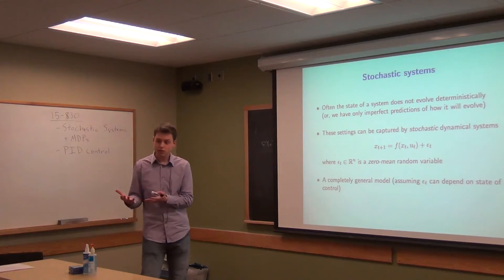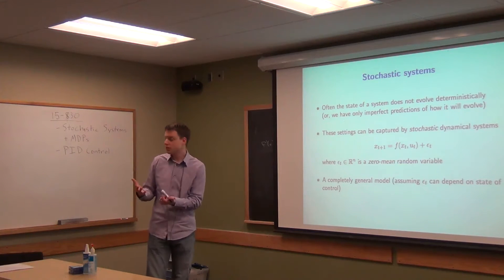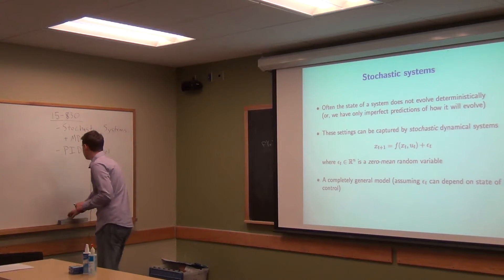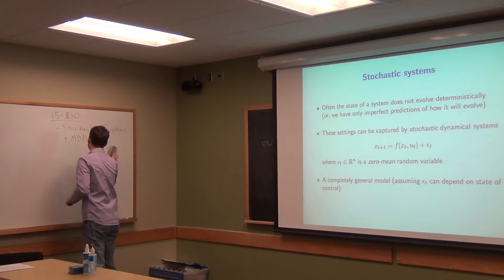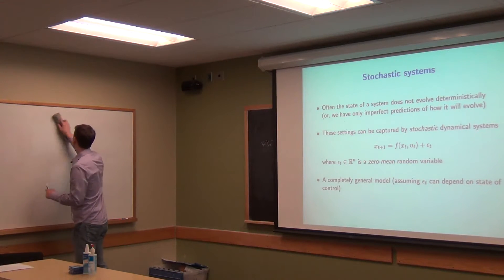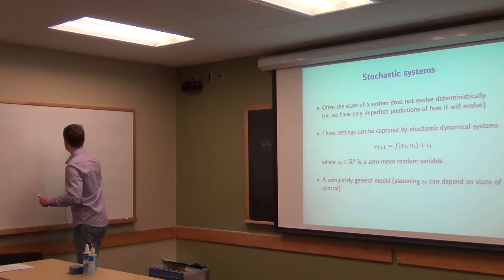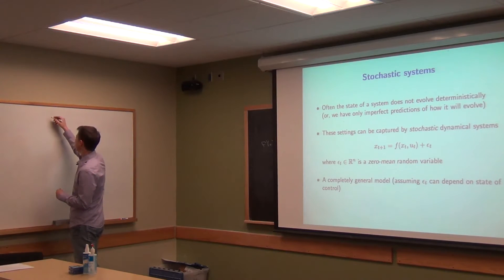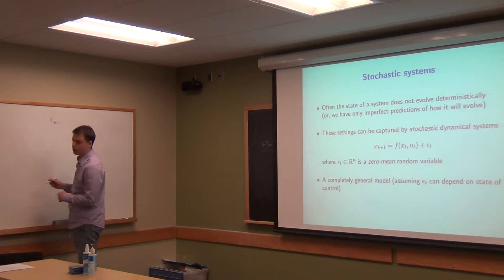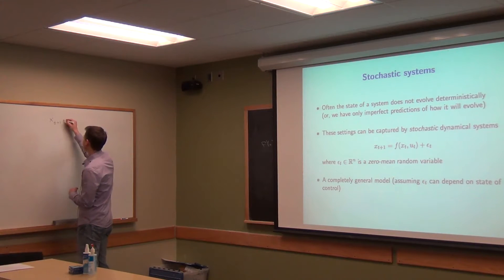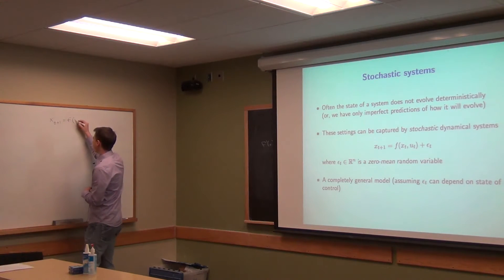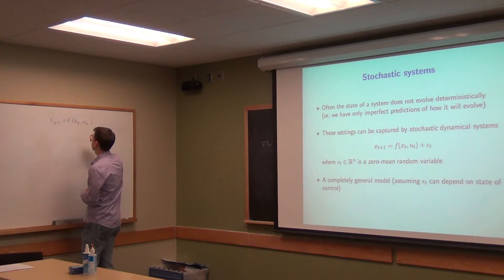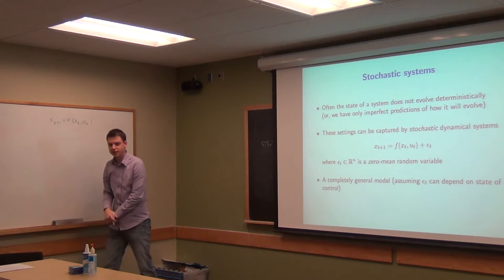Given the current state and control, we are given the next state at time t plus 1. This is in the discrete time case. It's just a deterministic function of x_t and u_t — it equals that exactly.